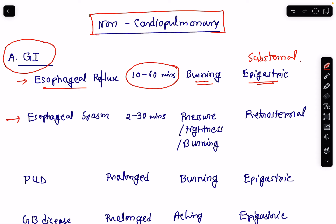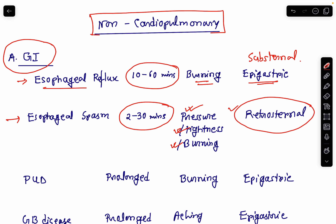Next is esophageal spasm. The duration of pain is usually 2 to 30 minutes and the character is like a feeling of pressure in the chest, tightness, or burning sensation. The location is retrosternal. It very closely mimics the pain of myocardial infarction because the quality of pain and location are almost the same — there will be feeling of tightness, pressure, and heaviness in the chest.